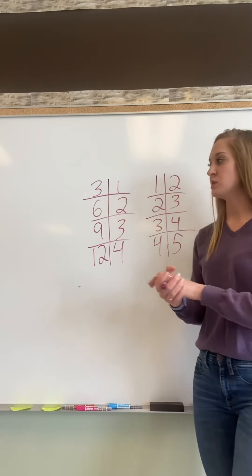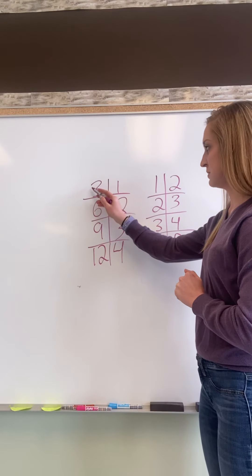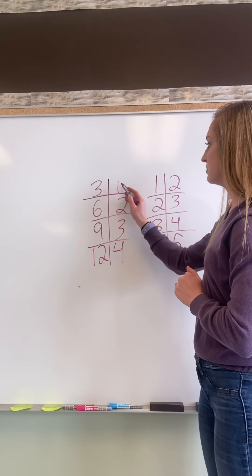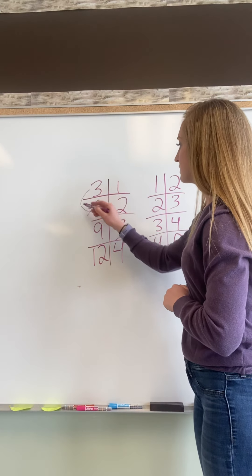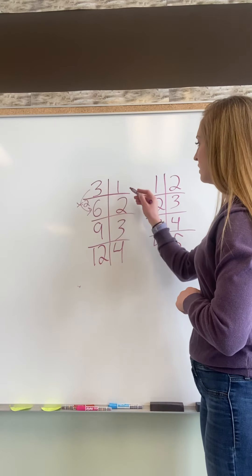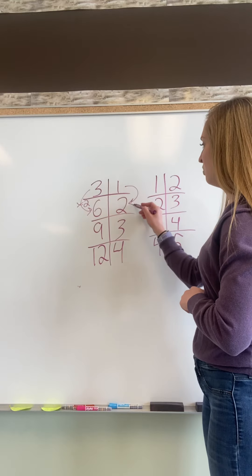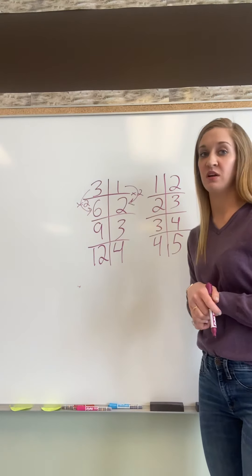So again, if it's a ratio table, whatever I'm multiplying this number by to get to this number, I'm also going to multiply this number by. So from three to six I have to multiply that by two. One times two is two, so we're looking pretty good on that one so far.